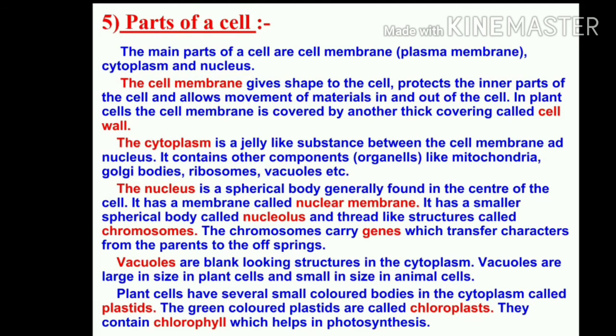We will also see vacuoles. Vacuoles are blank structures in the cytoplasm — they are large in size in plant cells and small in size in animal cells. The function of vacuoles is storage for plants. Plant cells have several colored bodies in the cytoplasm called plastids. The green colored plastids are called chloroplasts, and they contain chlorophyll which helps in photosynthesis by absorbing sunlight.